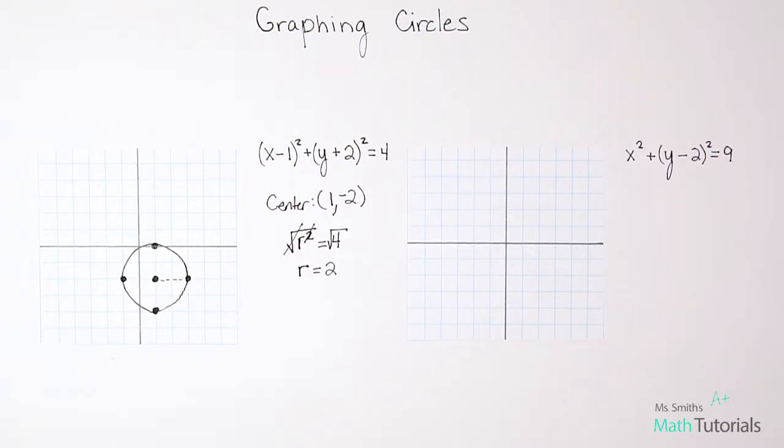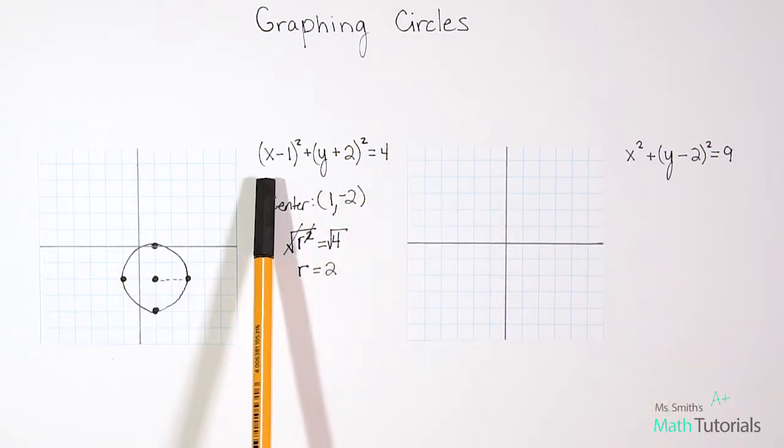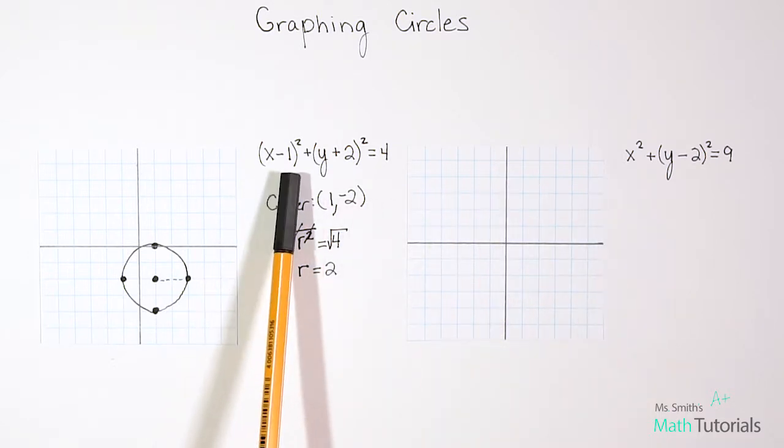Let's do one more example. So notice that this second one looks a little bit different. There's no parentheses in the first part like there was here. We just have an x squared instead of an x plus or minus something.